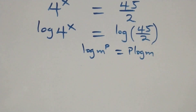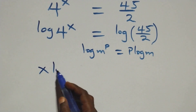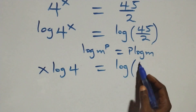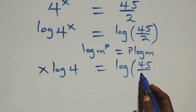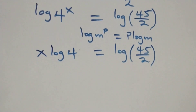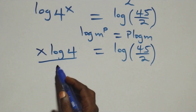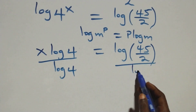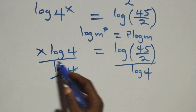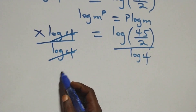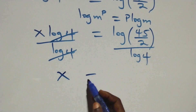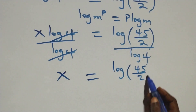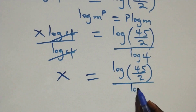This becomes x log 4 equals log(45/2). We then divide both sides by log 4; log 4 cancels, and we are left with x equals log(45/2) divided by log 4.